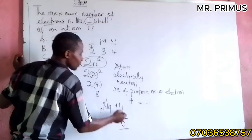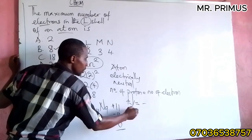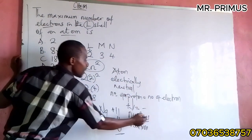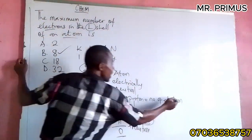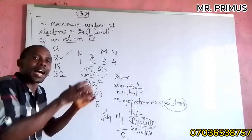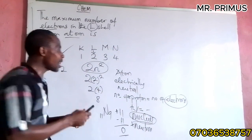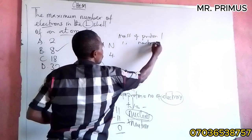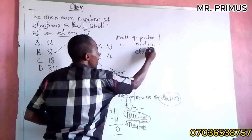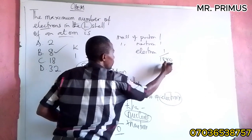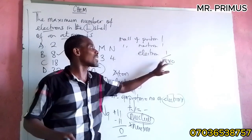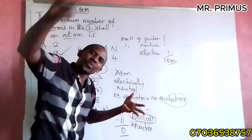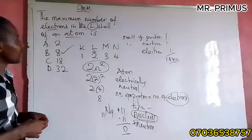Additional information: an atom is electrically neutral because the number of protons equals the number of electrons. Protons are positively charged, electrons are negatively charged. For example, sodium has atomic number 11, so it has 11 protons and 11 electrons — 11 minus 11 equals zero, neutral. The mass of a proton is 1, mass of a neutron is 1, and mass of an electron is approximately 1/1840 — so electrons are very light and revolve around the nucleus in shells and orbitals.